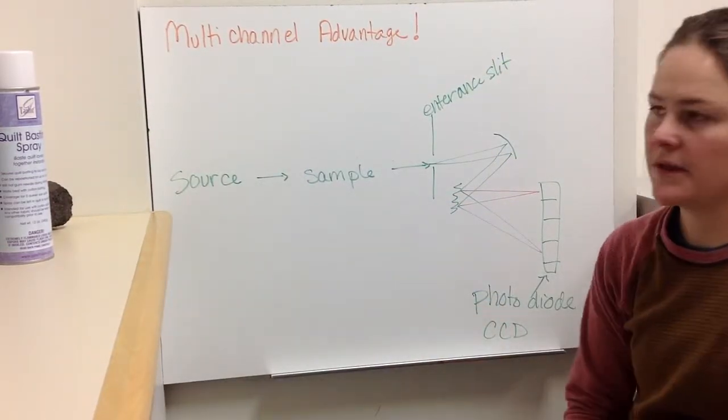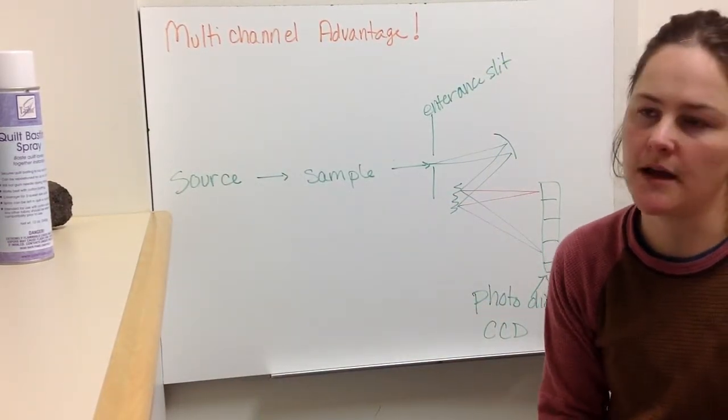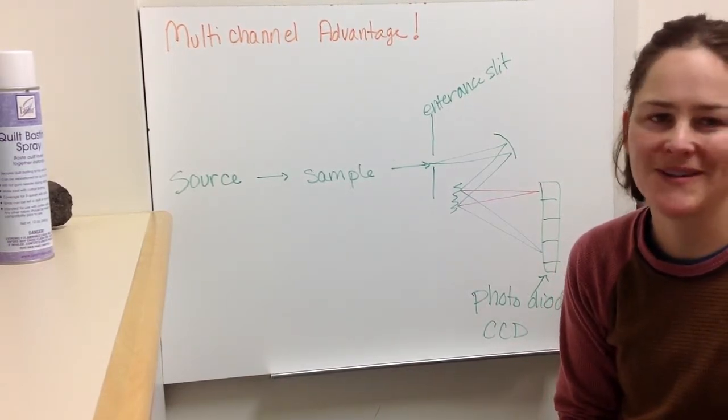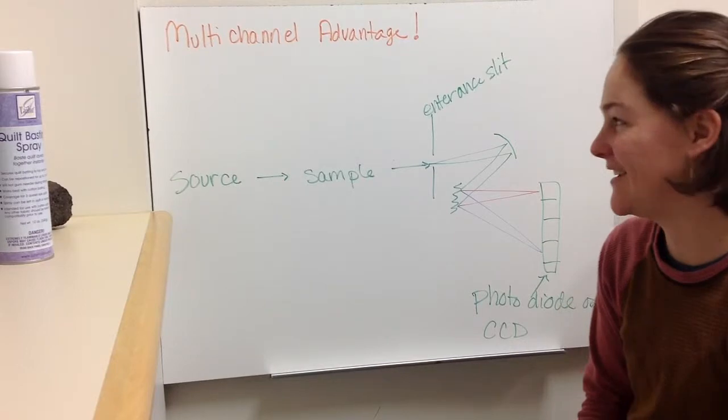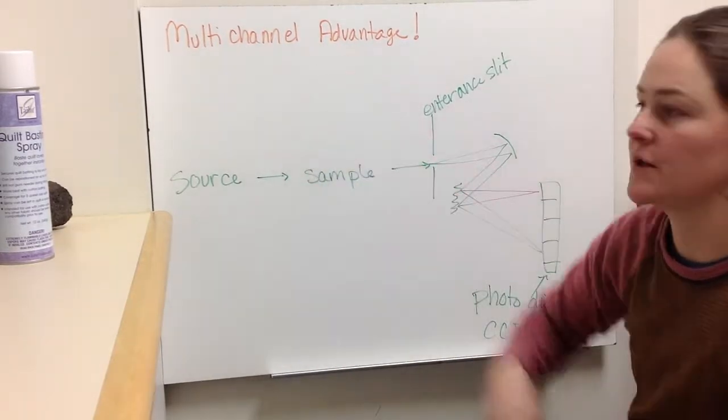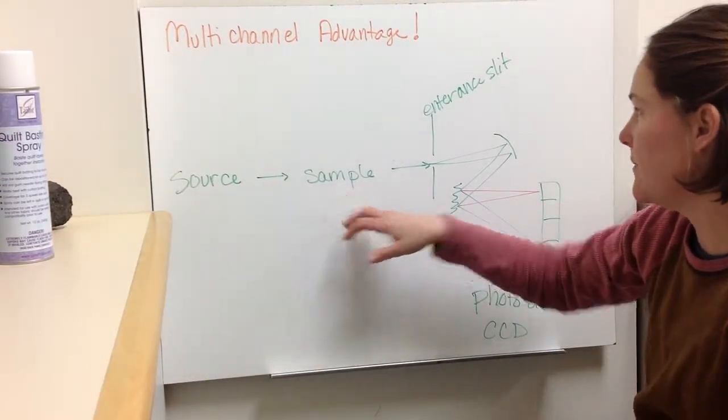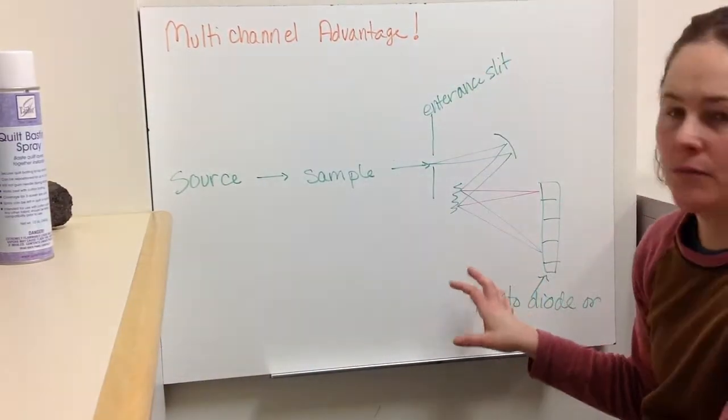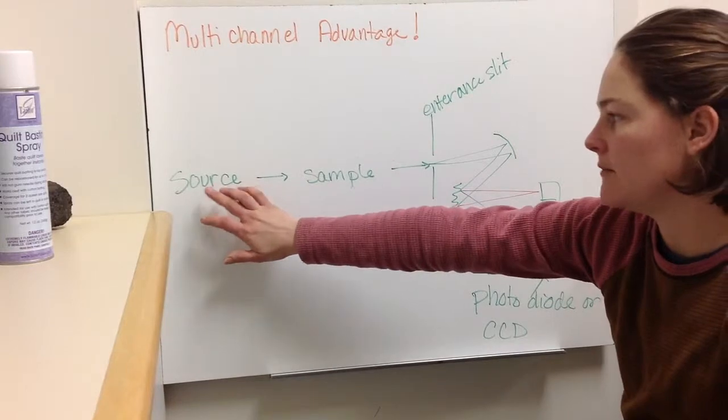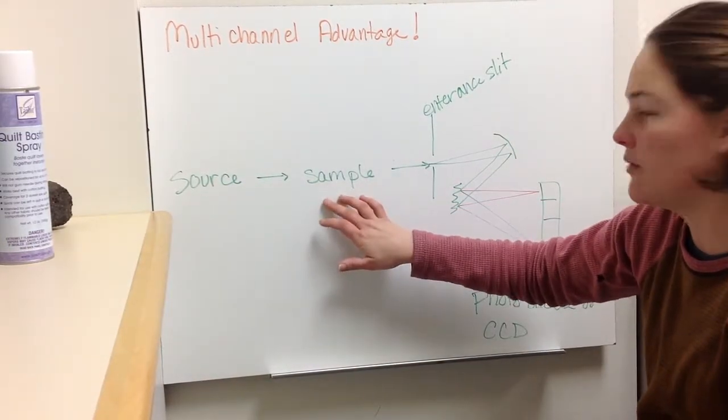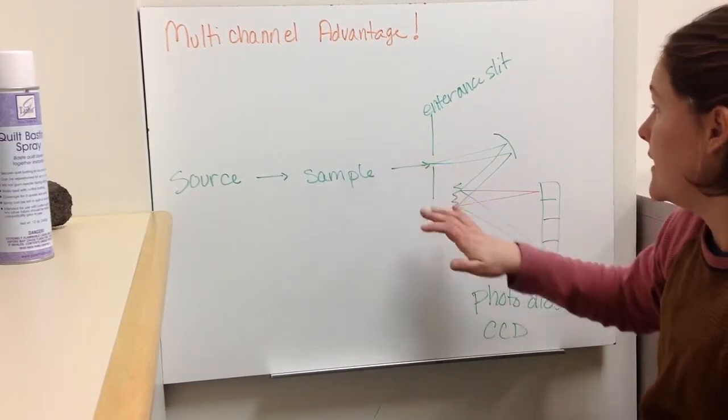But these double beam instruments, I'm sure that there's still a lot in use, but we actually have some really way better technology now. We can actually detect a bunch of different wavelengths all at the same time. So in this case, you would have the source, the sample, and then instead of having a full-blown monochromator, you're having many wavelengths coming from your source, interacting with your sample all at the same time.